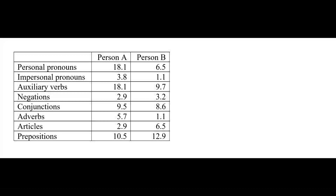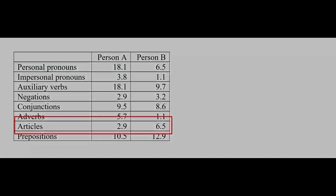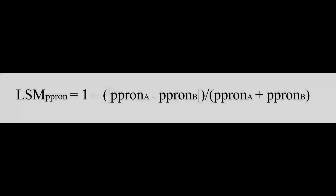The LSM program first calculates the rates that these two people use function words. As you see in the table, we have each person's LIWC function words. Person A uses personal pronouns almost three times more than person B — 18.1% versus 6.5%. Person B uses twice as many articles as A. LSM is calculated by comparing the similarities of the rates of function words between the two people's texts. We're calculating the absolute difference in function words between the two texts and dividing by the sum of the two texts, since we just want to see how far apart the two texts are from each other, irrespective of which text is high or low.